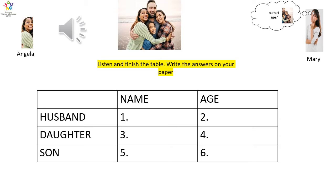How do you spell Neville? It's N-E-V-I-L-L-E. How old is he? He is 45 years old. What's your daughter's name? My daughter's name is Chelsea. How do you spell Chelsea? It's C-H-E-L-S-E-A.